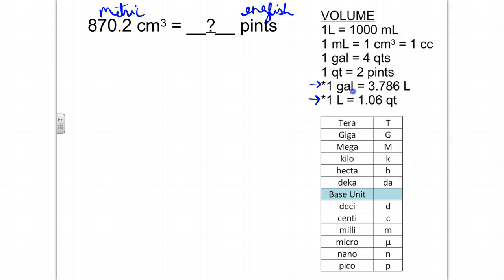I have two options. We can go from gallons to liters or from liters to quarts. Notice that my metric unit is centimeters cubed. So I have to get it to liters because that's really my only option as far as a metric unit is concerned. My goal is going to be to get from centimeters cubed to liters.